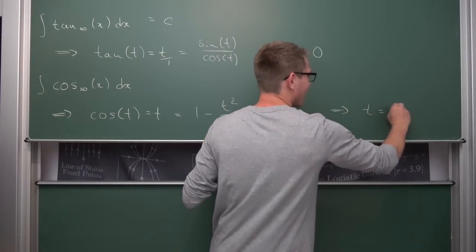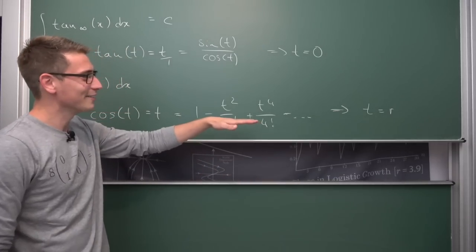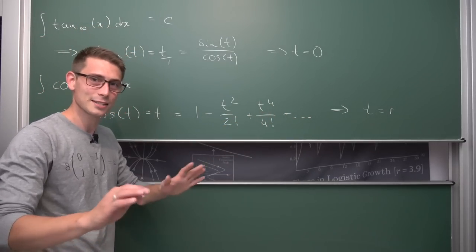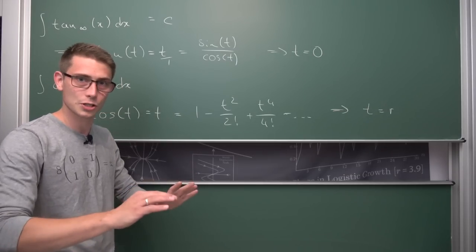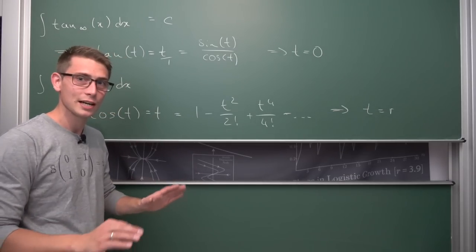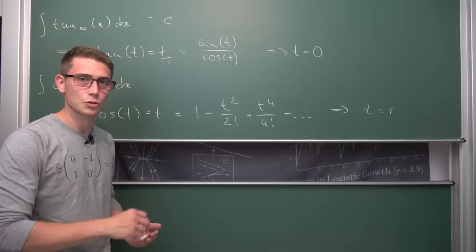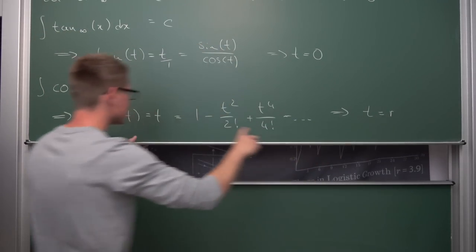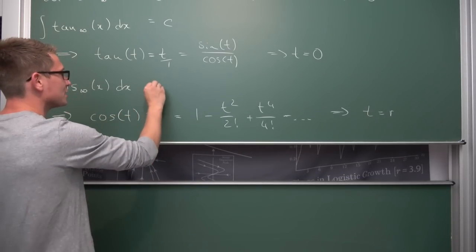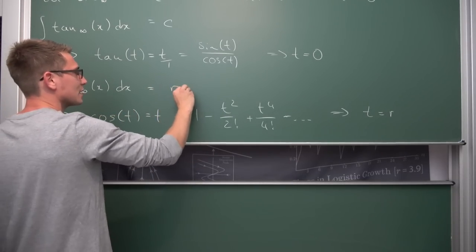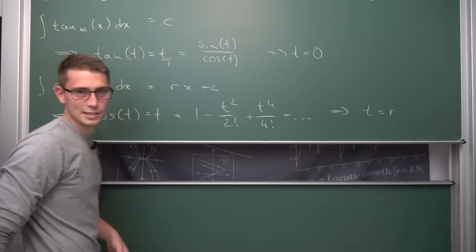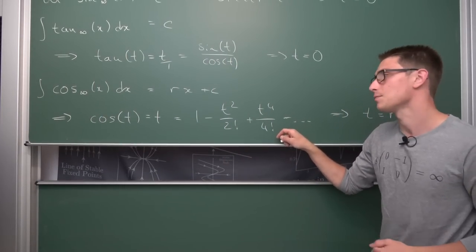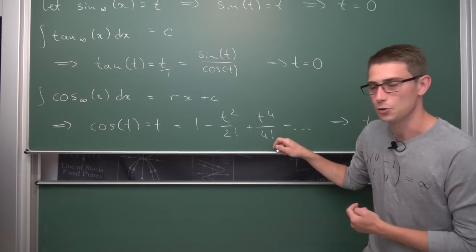So t must equal r, the Dottie number. It's a cool number — rather hard to find explicitly, it converges very slowly. But Dottie's number satisfies this fixed-point equation, meaning our integral evaluates to r times x plus some arbitrary constant C. That is cosine infinitely nested, and thus our integral.